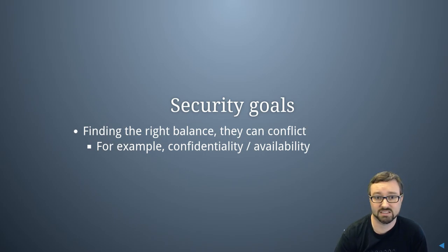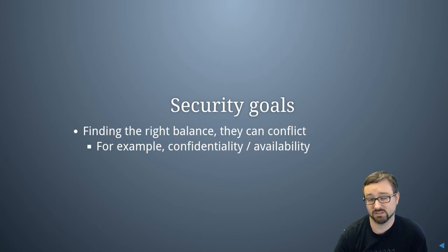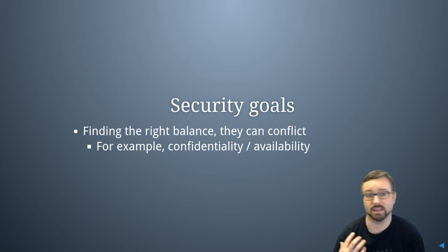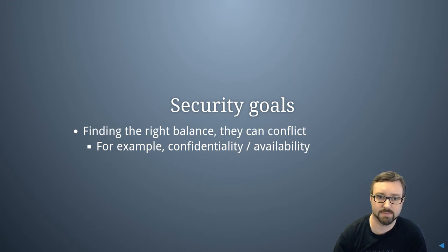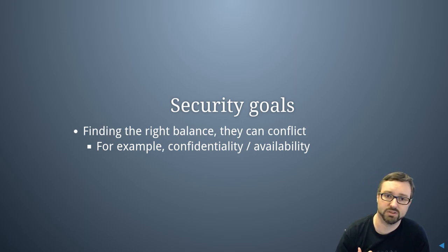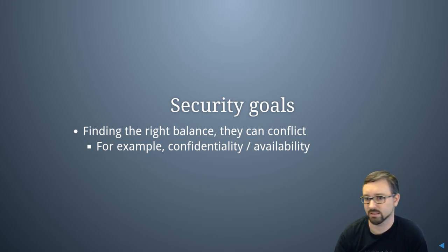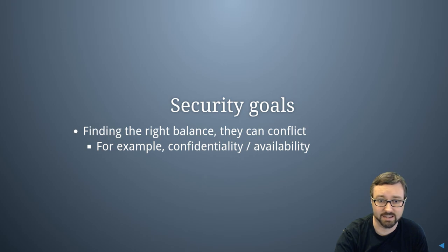Sometimes these goals can conflict. For example with availability: when something fails, do you want it to fail so that it is no longer available? Getting that balance correct — letting people that are allowed to access it do so, while also making sure that other people can't access it — is about getting that balance right. So that is the CIA triad.